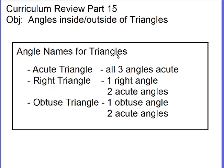We name triangles the same way we name you when you're in trouble: it has a first name, a middle name, and a last name. All triangles are related, so the last name is 'triangle.' The first name is an angle name. You have an acute triangle, where all three angles are acute. You have a right triangle, where one angle is right and two are acute. And then you have an obtuse triangle, where you have one obtuse angle and two acute angles.